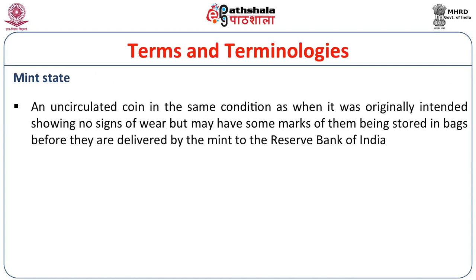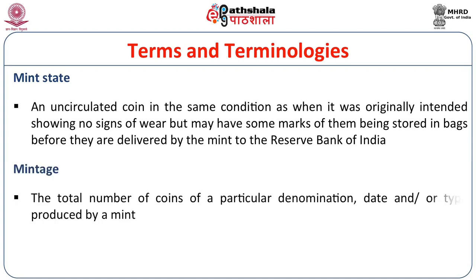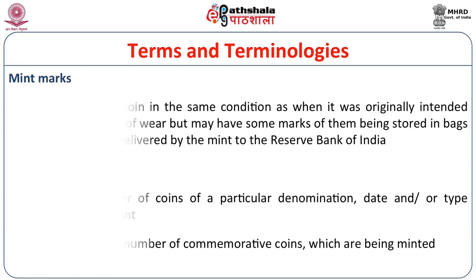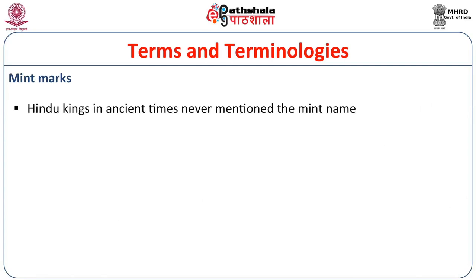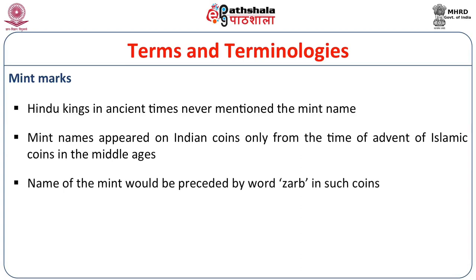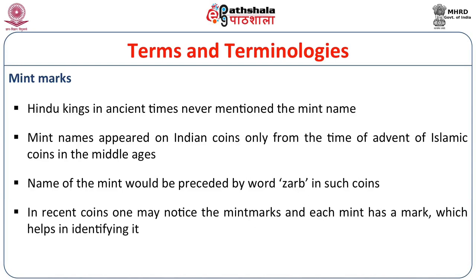Mint state refers to an uncirculated coin in the same condition as when originally minted, showing no signs of wear, though it may have bag marks from storage before delivery by the mint to the Reserve Bank of India. Mintage is the total number of coins of a particular denomination, date, and type produced by a mint. Hindu kings in ancient times never mentioned the mint name; mint names appeared on Indian coins only from the time of Islamic coins in the Middle Ages, preceded by the word Zarb. In recent times, each mint has a mark to help identify it.